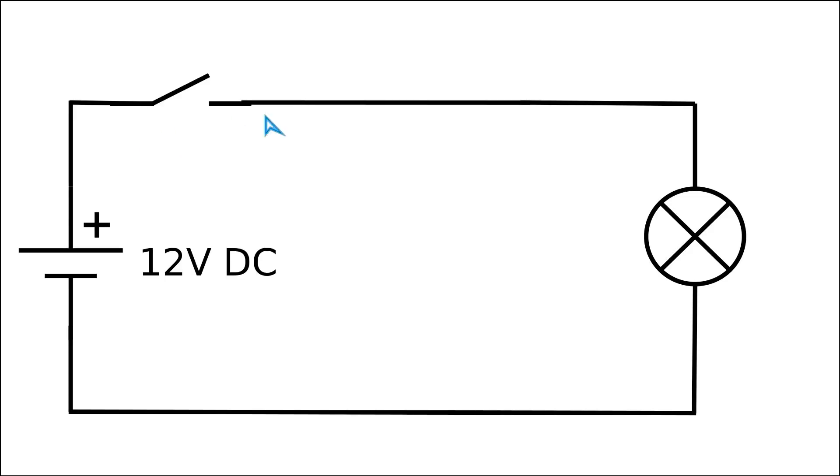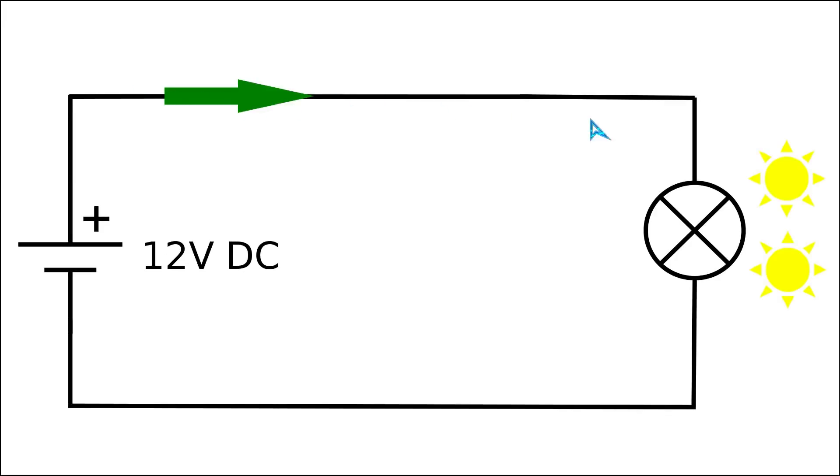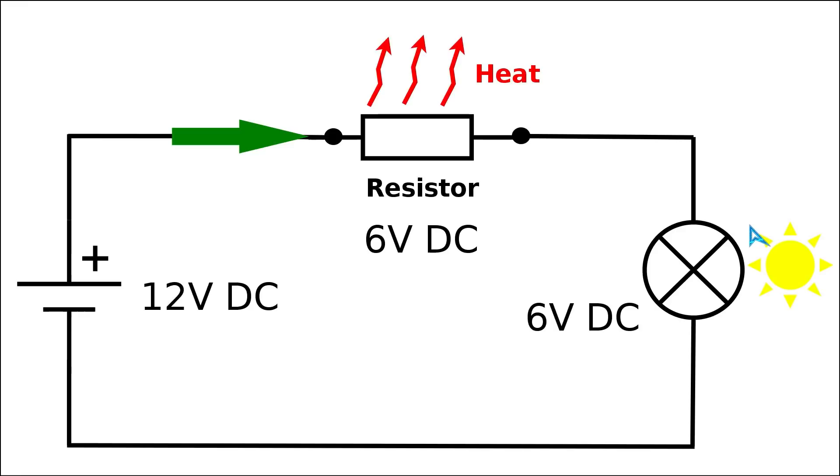In the last video regarding linear power supplies, we used this very simple circuit. The main idea was that we have a 12V DC power supply and an incandescent light bulb. After we press down this switch, we have a current flowing through the circuit, and due to this current, the filament heats up and the lamp emits light with full brightness.